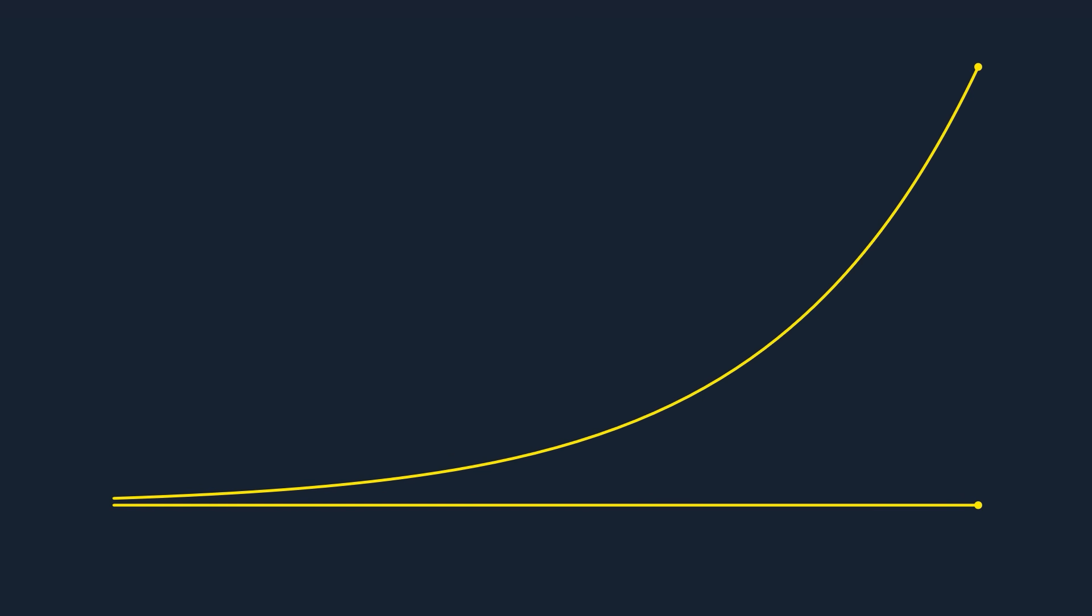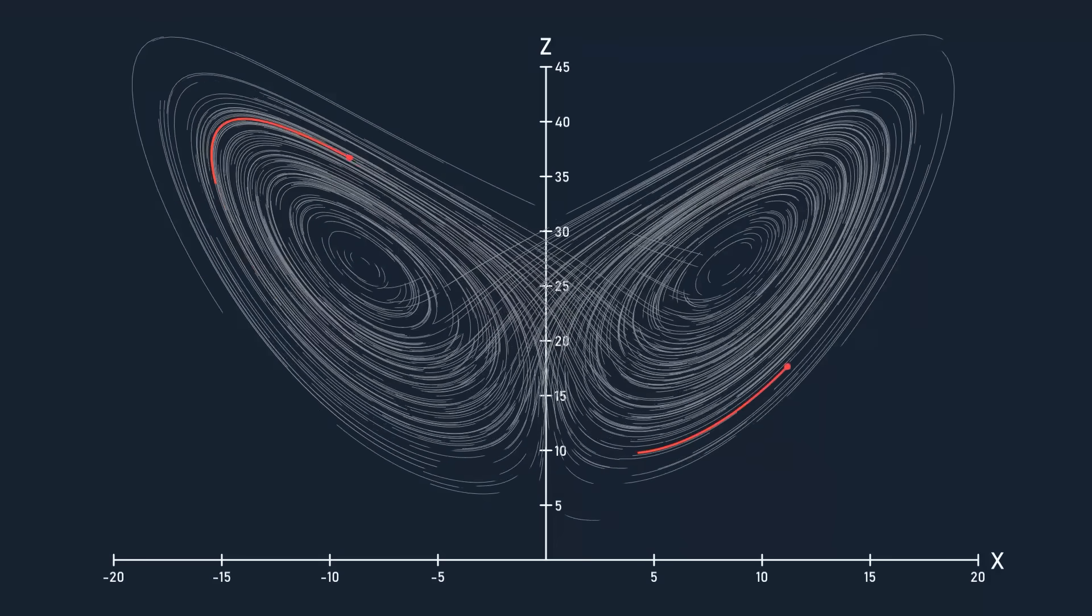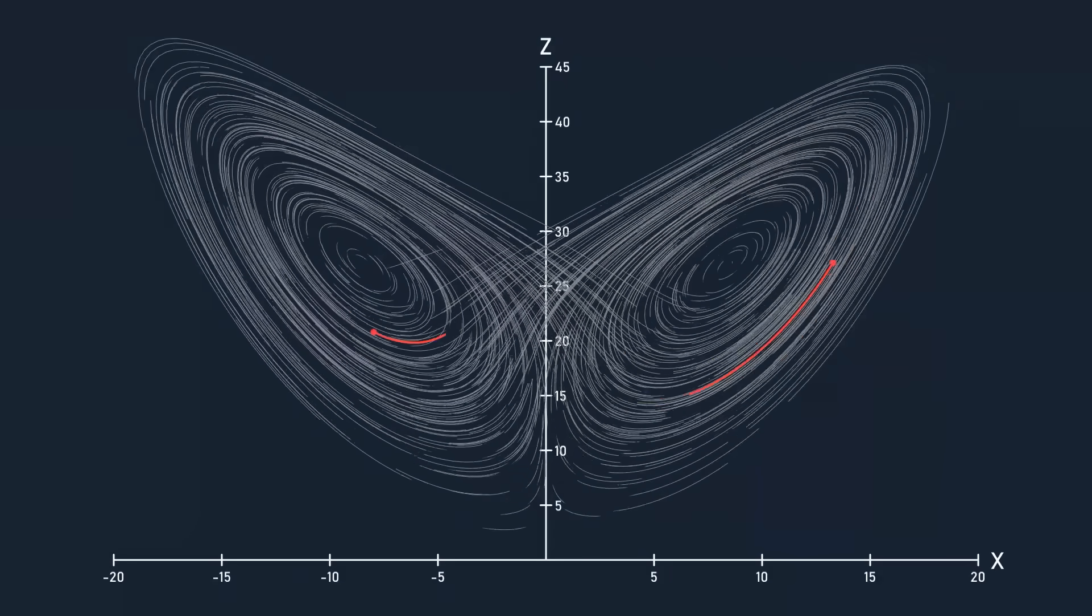After a time of t, the resulting difference is the initial difference times e to the power of lambda t. Up until a certain point, of course, since the attractor is only so big. Here, lambda stands for an important value known as the Lyapunov exponent. Since it's a factor of the exponent of e, if it's positive, then any distance between trajectories will increase exponentially. If it's equal to 0, then the distance will stay constant, and if it's negative, then the distance will converge to 0.